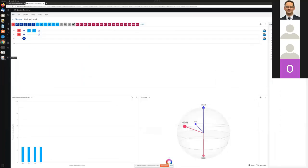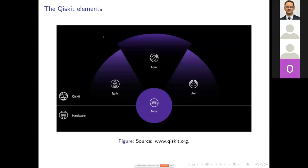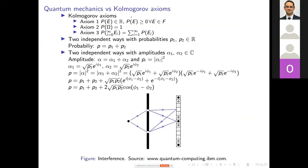Now we'll move to quantum physics basics — mostly linear algebra — so that we understand what we're doing, what these gates are doing and why. A nice way to understand quantum mechanics is as a special kind of probability theory. In classical probability, you have Kolmogorov's axioms: probabilities sum to one, are non-negative, and if you have disjoint events, probabilities add up. But in quantum mechanics, instead of probabilities you have amplitudes, which are complex numbers.